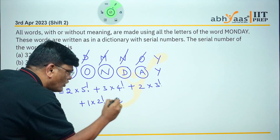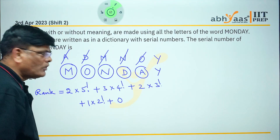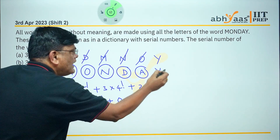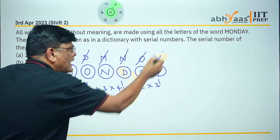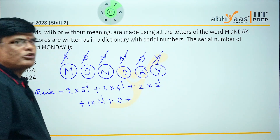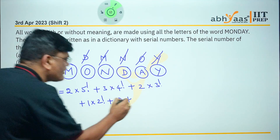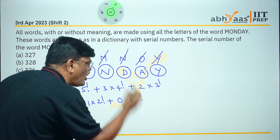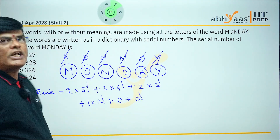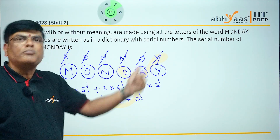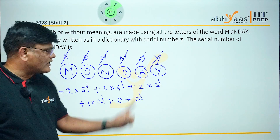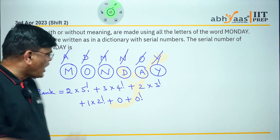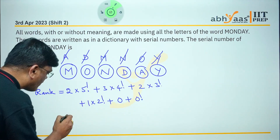Next, plus: circle the letter A and cancel A. Before A there is no letter, so it is 0 × 1!. Then circle letter Y and cancel Y. For the last letter we write 0!, which on counting equals 1, so we write 0! (which equals 1).